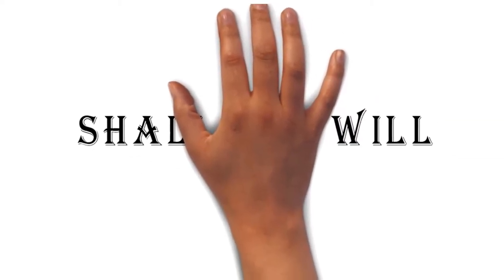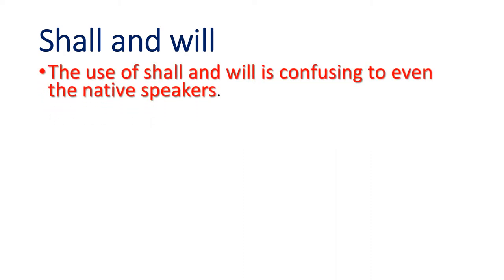Friends, the topic for today's video is a little interesting and a little confusing. It is about two auxiliaries. These two auxiliaries give different meanings in different places. Let us learn which are the two auxiliaries. The two auxiliaries are shall and will. The use of shall and will is confusing even to native speakers — those whose first language is English.